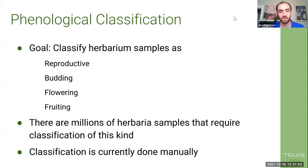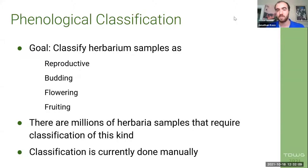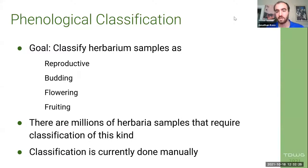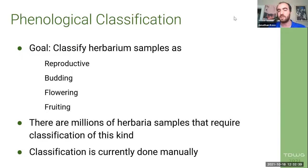The problem we focused on was using herbarium samples to classify phenology. There have been machine learning competitions for this type of labeling using herbarium sheets for four categories of reproductive state, and a number of papers got pretty good results using deep learning. The collection I work with at the Harvard Botany museum has hundreds of thousands of unlabeled herbarium sheets requiring this kind of classification, currently being done manually. So we wanted to try to use deep learning to speed this up.